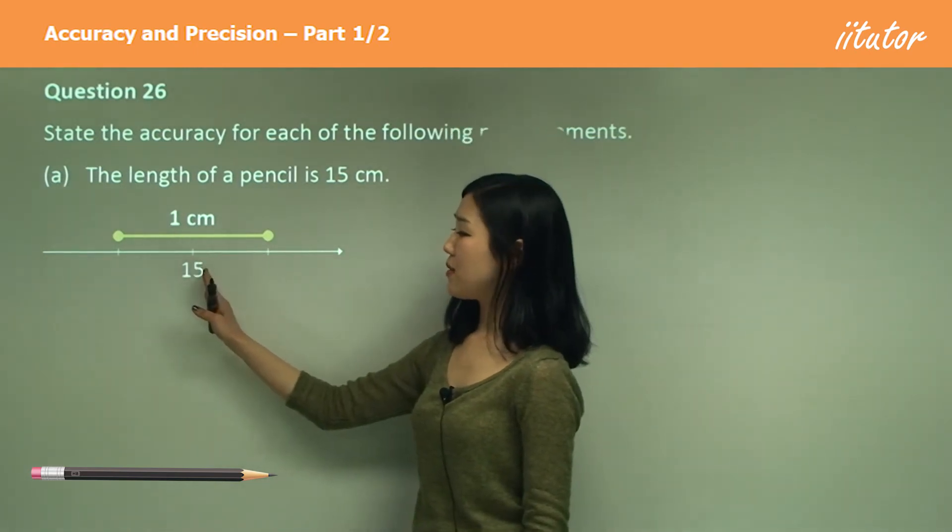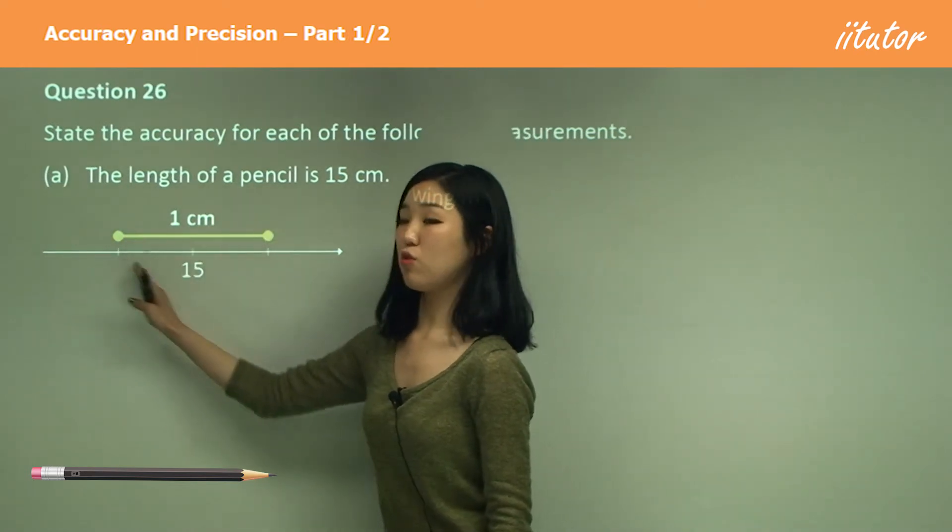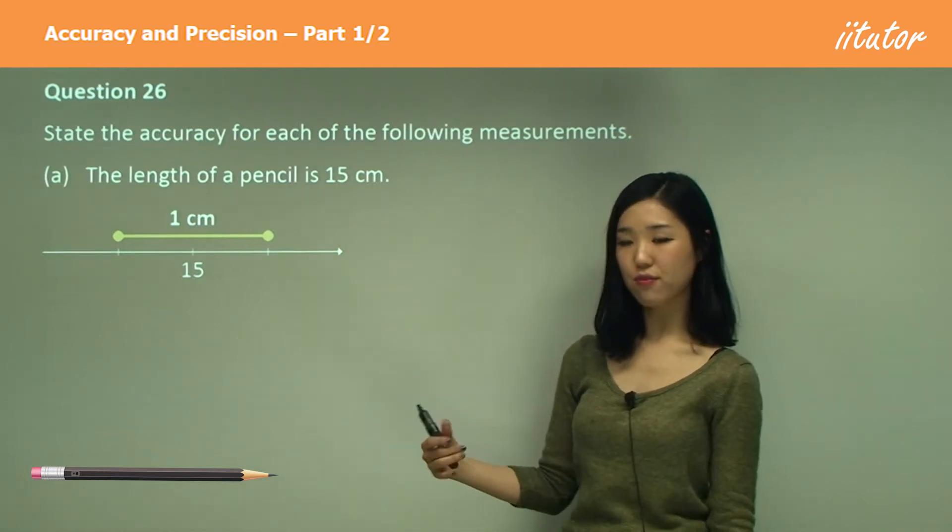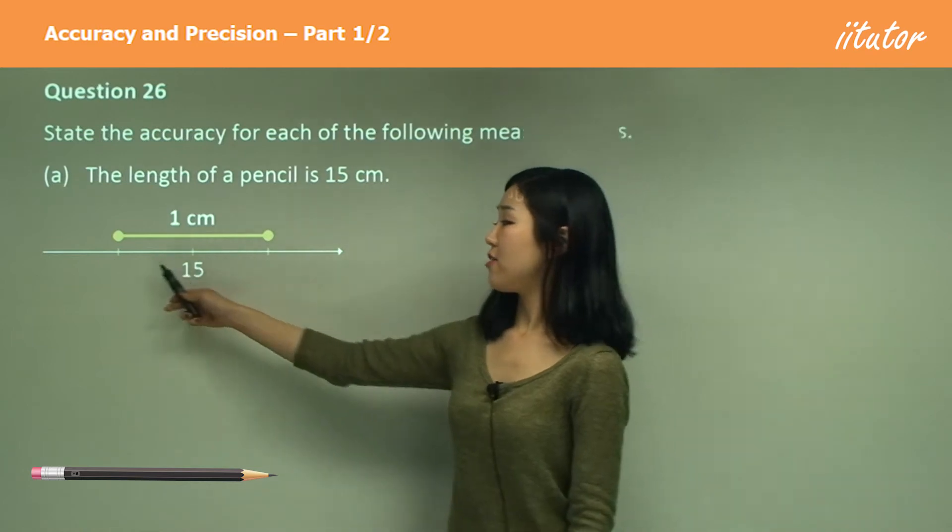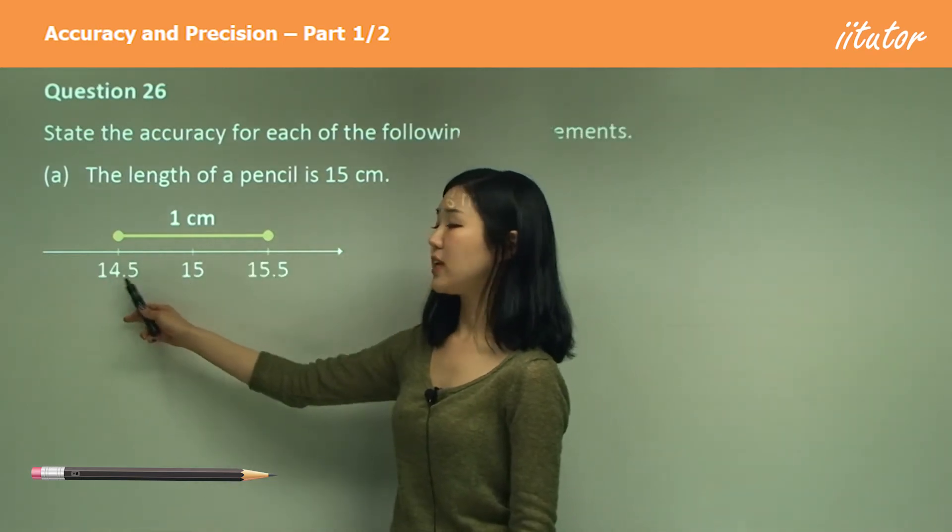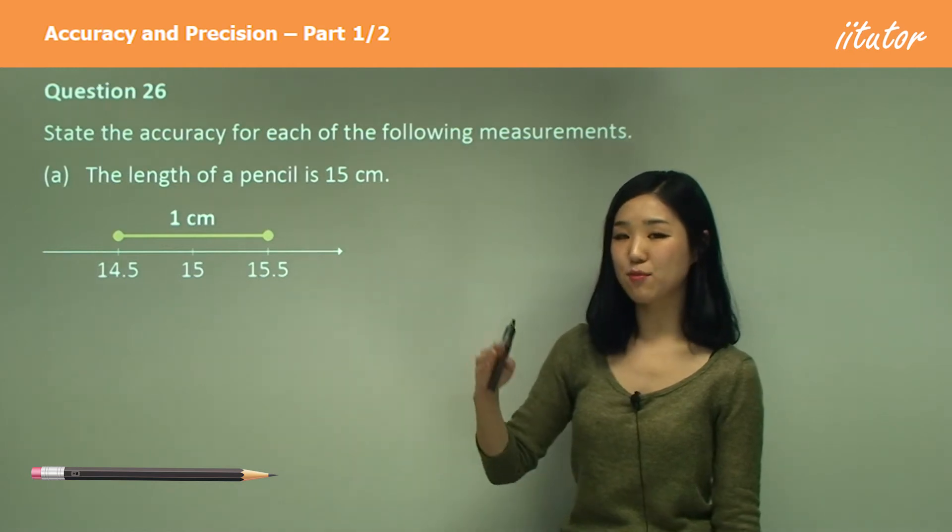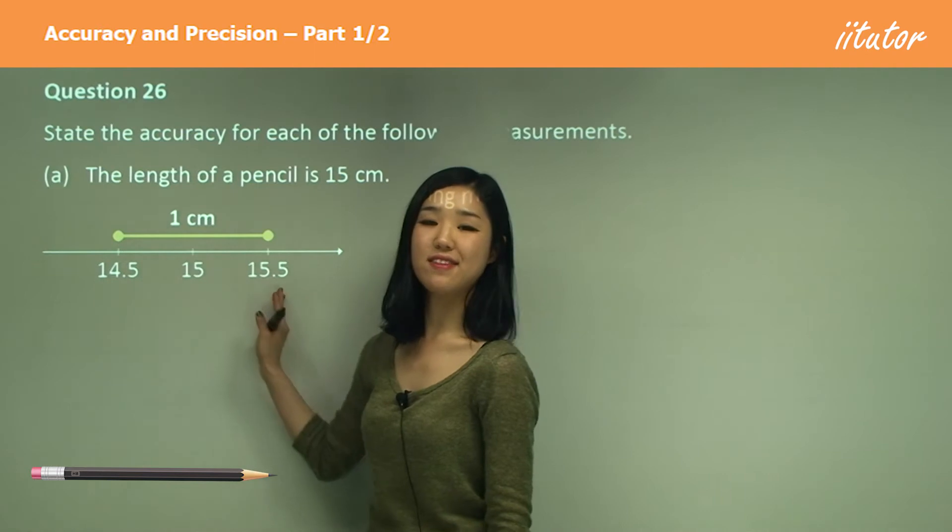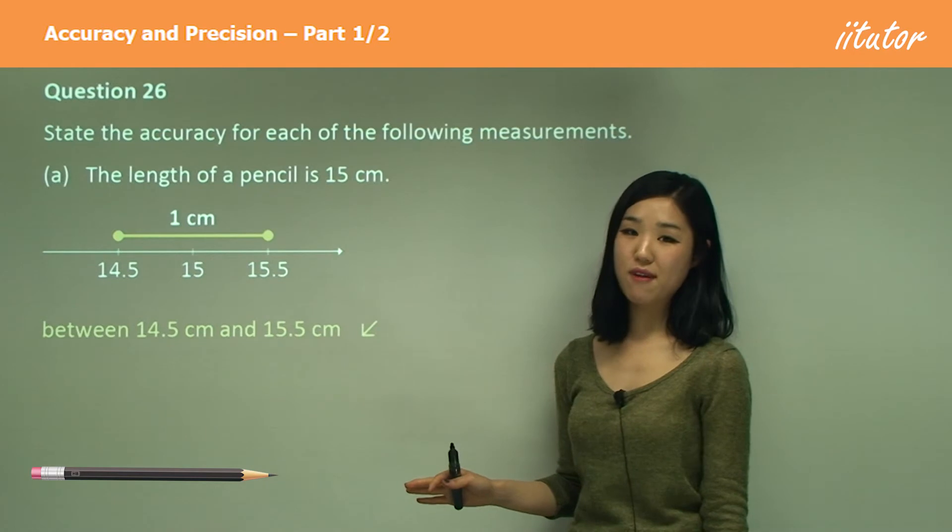Now 15 centimeters, it's from this to this, which equals to one centimeter. So what we do is remember we add a half and subtract a half. So what's half of one? 0.5. So that point there will be 14.5 and that will be 15.5. So we add and subtract half of one on either side. So the values of accuracy are 14.5 and 15.5.